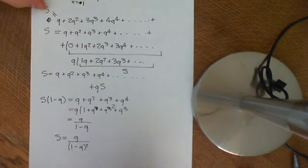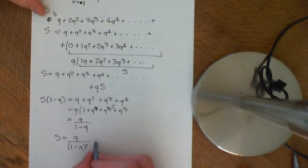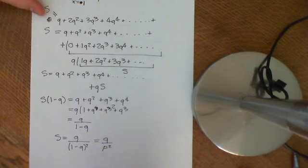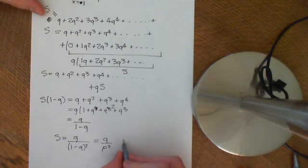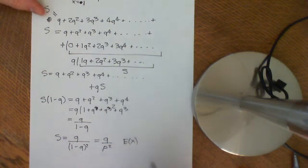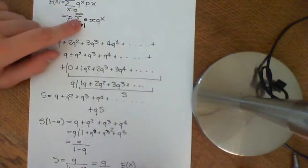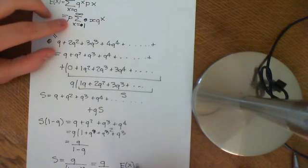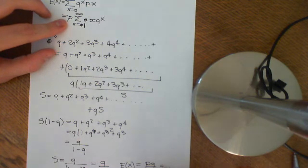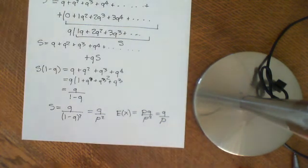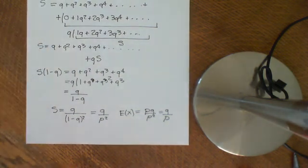We know that 1 minus q equals p, so we get that S equals q over p squared. But the expected value of X was equal to this sum times p, so we get that the expected value of X is p times q over p squared, which equals q over p. And that is the expected value for a random variable which is distributed geometrically.